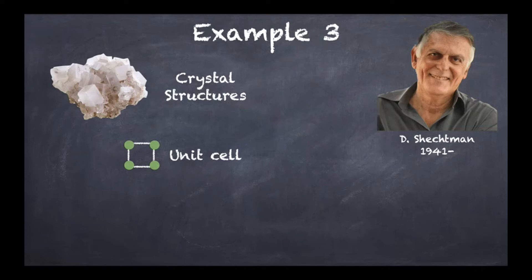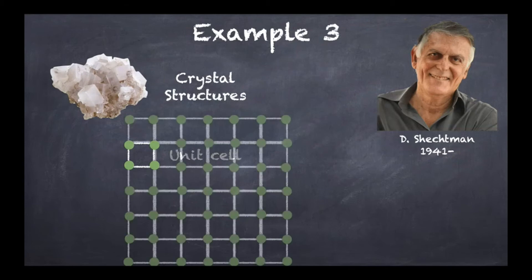Now for simplicity, I'm using a unit cell which is a square, but of course there are various different shapes that can be used for unit cells. Also for simplicity, I'm using a two-dimensional representation, but obviously three-dimensional representation exists as well. Once you have this particular unit cell, the standard model of crystalline structures claims that this cell is going to be repeated so that it fills the entirety of space.